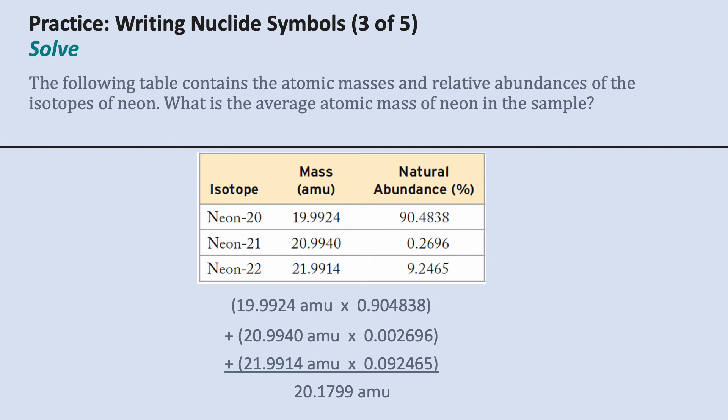Its percent abundance was pretty tiny, 0.26%. So converted to a decimal, it's 0.002696.